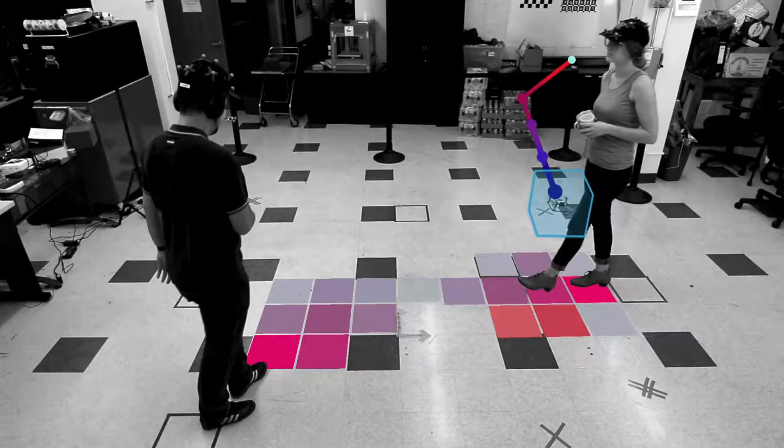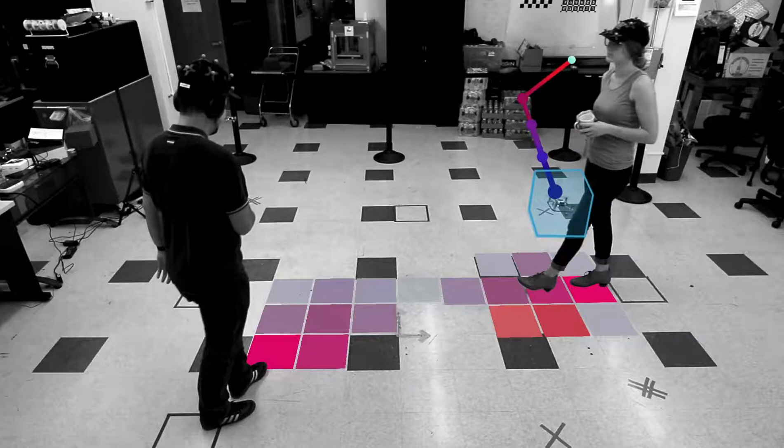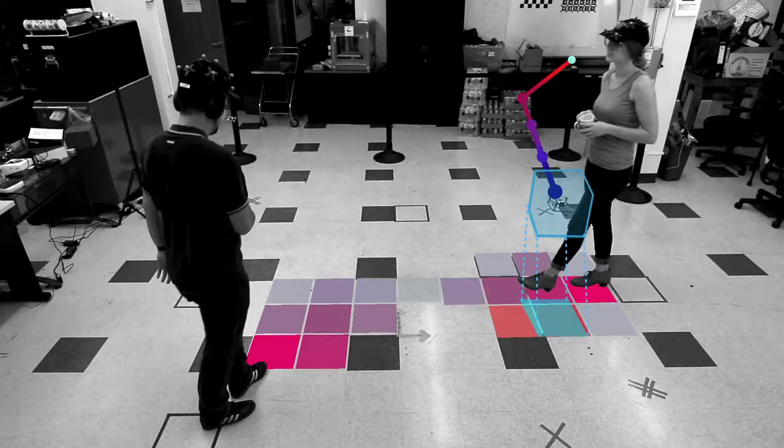We represent the predicted state distribution for each human as a time-bearing occupancy grid. For each human, the probability of collision at any given point in space and time is upper bounded by the integral of this distribution over the tracking error bound. This integral yields a marginal probability of collision with each human.